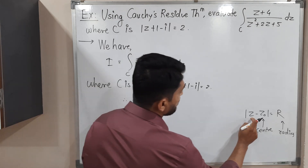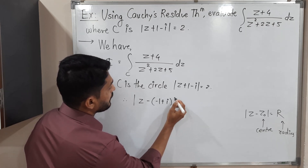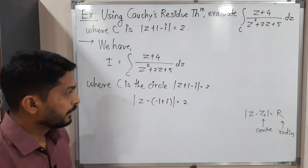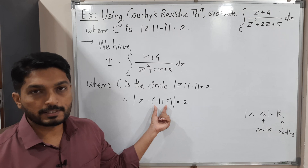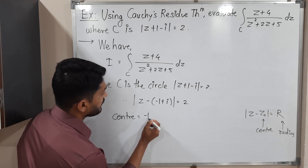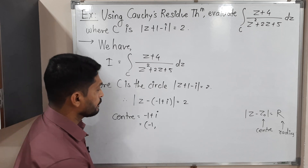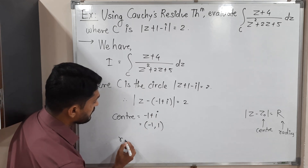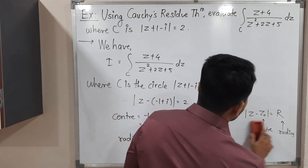We should express the given equation in standard form. We rewrite it as |z − (−1 + i)| = 2, bringing it into the form |z − z₀|. Comparing, the center z₀ is −1 + i, meaning the real part is −1 and the imaginary part is 1. So we have a circle with center (−1, 1) and radius R = 2.